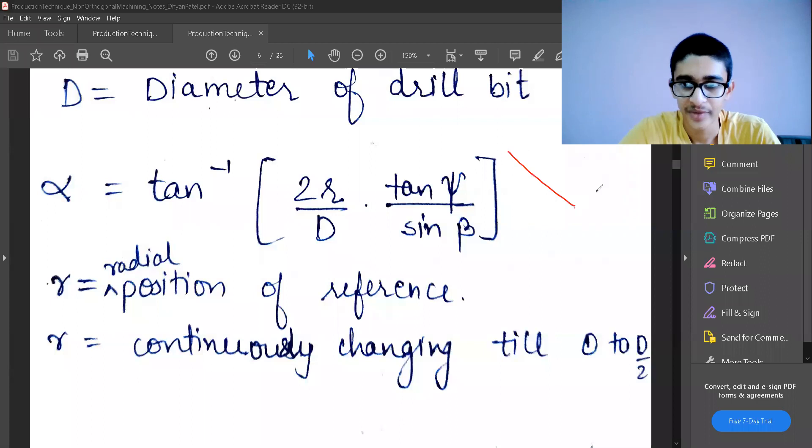This is how a drill bit will come into the picture. We have a drill bit like this, and from center this is the diameter d, this will be d by 2, and this is at any radial position r. So this r will change from 0 to d by 2. That's the meaning of r.